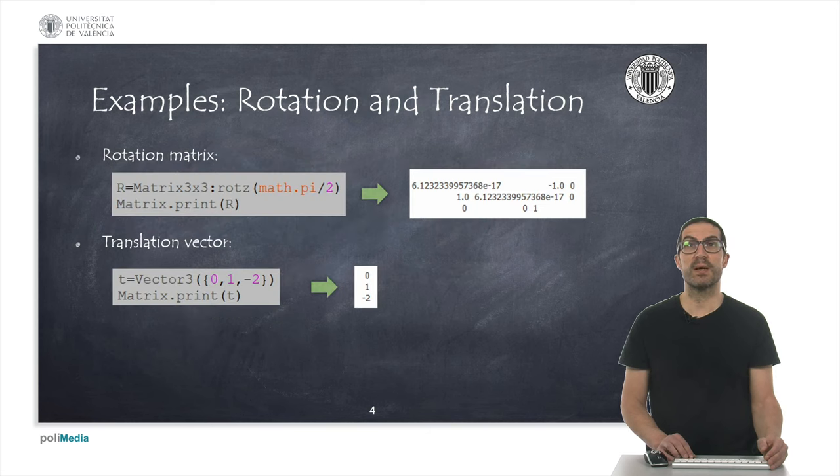Here, I show a couple of examples to define a rotation matrix with the rotZ function, although we could also use rotX or rotY functions. Both of them are also defined in the Matrix3x3 class. To define a position from a LUA table, we can use the Vector3 class, as shown.